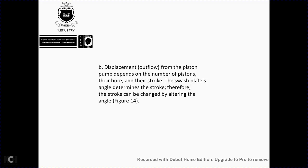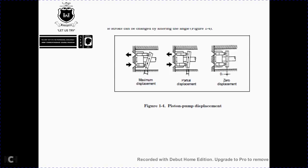Displacement output of the pump depends on the number of pistons and the stroke of each piston, which is determined by the swash plate angle (figure 1-4). Varying the swash plate angle changes the stroke: at maximum angle, maximum displacement; at partial angle, partial displacement; at zero degrees, zero displacement.